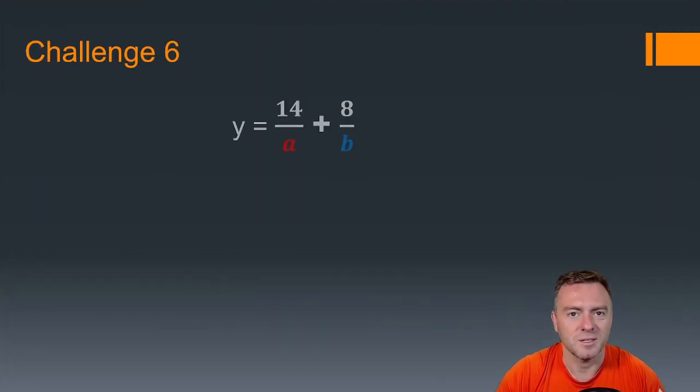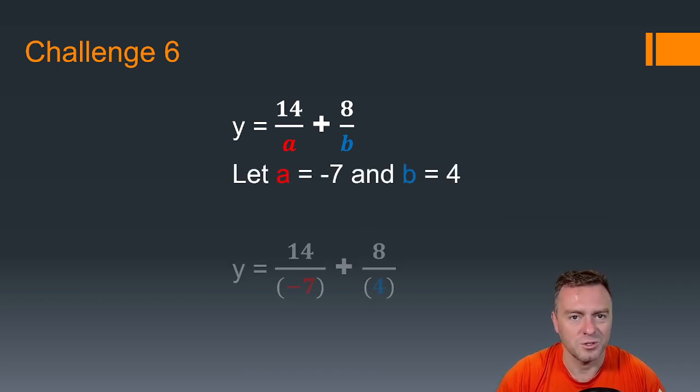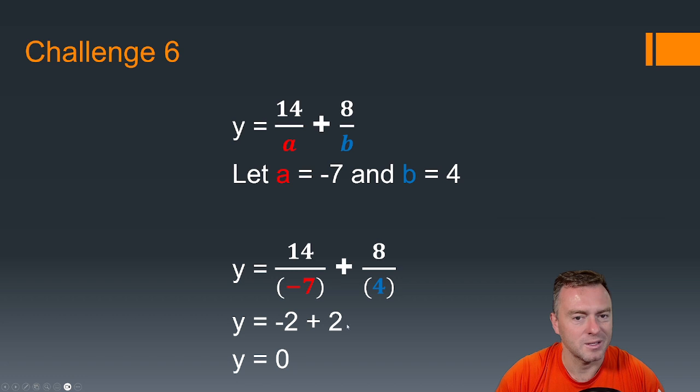A little bit more complex one. Have a go at this one. So just pause the video. What you should have found is you would have 14 ÷ -7 + 8 ÷ 4. So you've got -2 + 2, which then gives you 0.